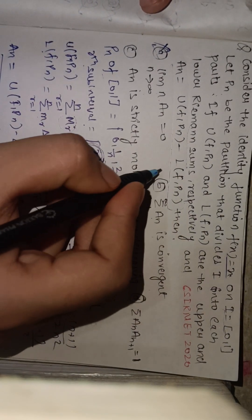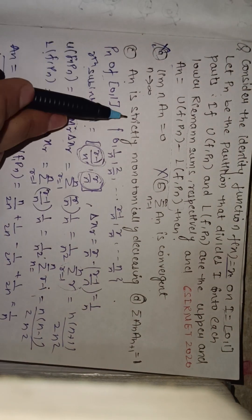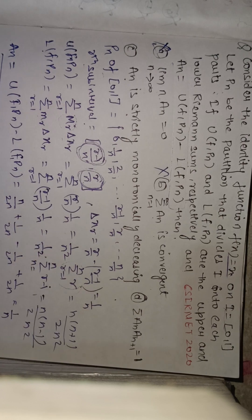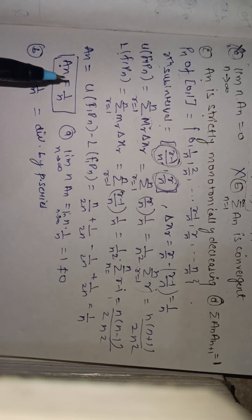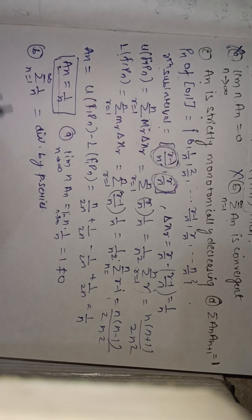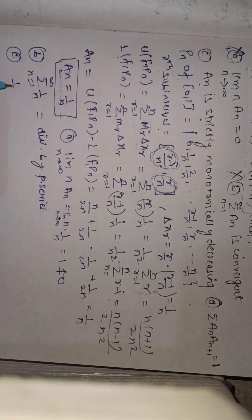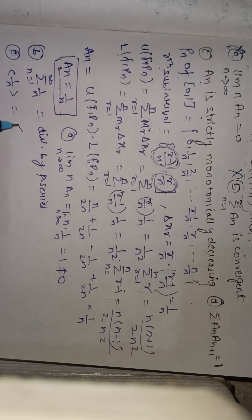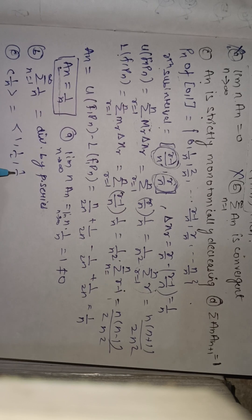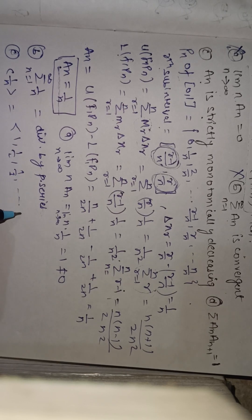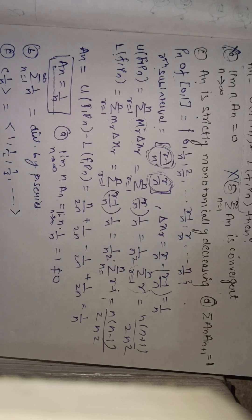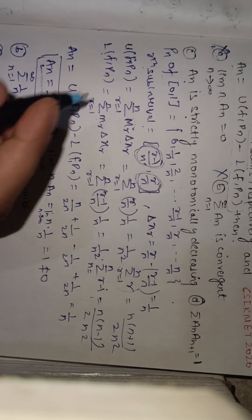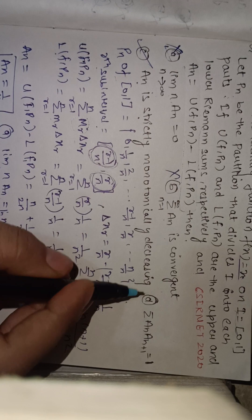Option C states that An is a strictly monotonically decreasing sequence. Since An = 1/n and the values are 1, 1/2, 1/3, ..., going to 0 as n → ∞, this is indeed a monotonically decreasing sequence. So option C is correct.